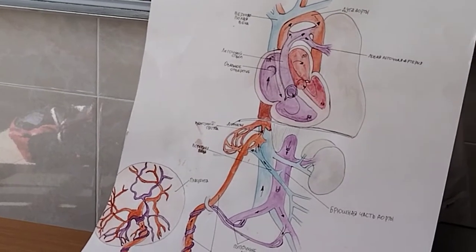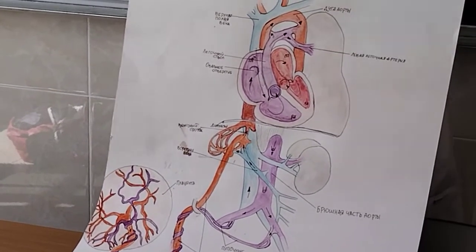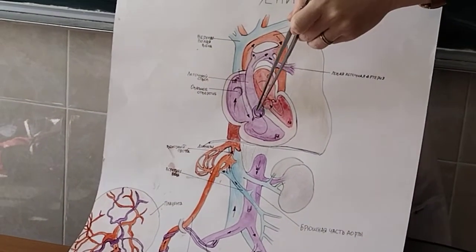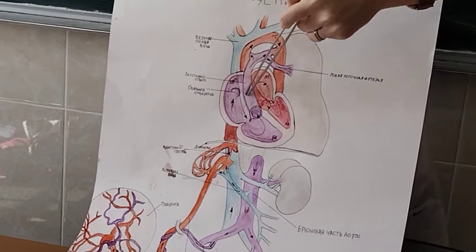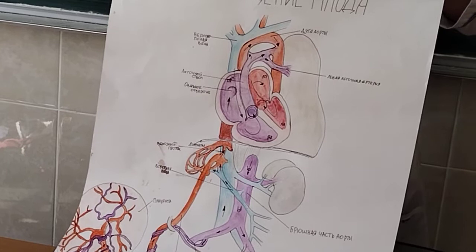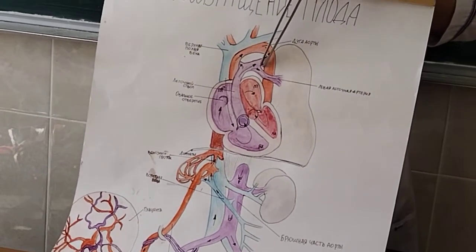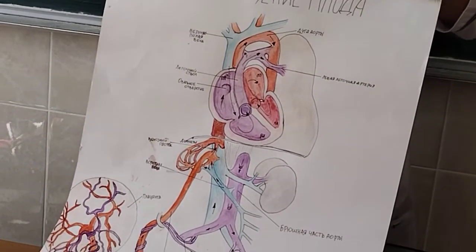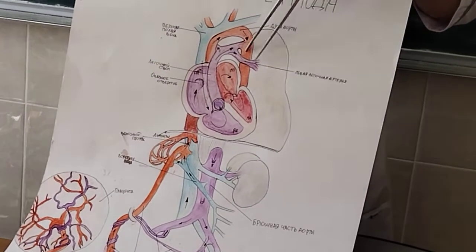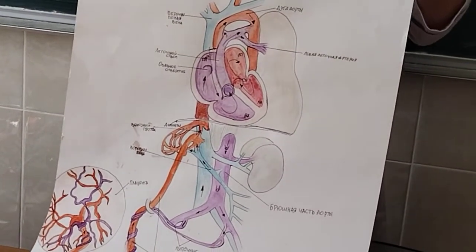And then it goes to the pulmonary trunk. But we said lungs do not work, yes? That's why again the largest part of the blood that enters the pulmonary trunk goes to the aorta through the arterial duct or ductus arteriosus. Here we can see it, ductus arteriosus. And only a very small part of the blood reaches the lungs for their blood supply.